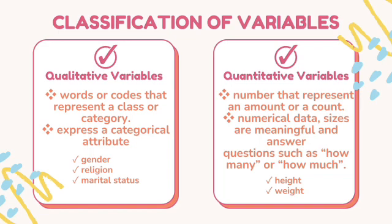For quantitative variables, it is a number that represents an amount or count — numerical data, sizes — and answers questions such as how many or how much. Examples include height, weight, household size, and number of registered cars.